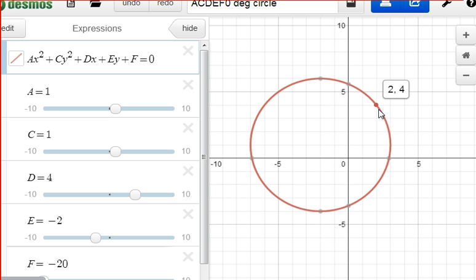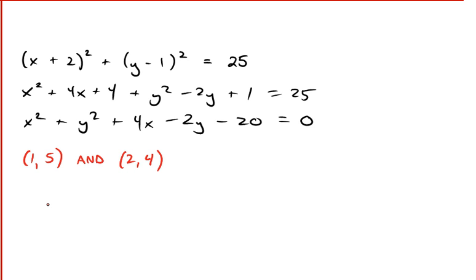So let's just take a look at some of the points on this circle. As you can see, we have a whole collection of points. Infinite number of points. Let's just pick a couple here. It appears as though the point (1, 5) is part of this locus of points. And so is the point (2, 4). So (1, 5) and (2, 4) apparently satisfy the given equation.